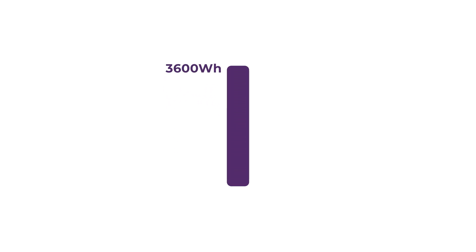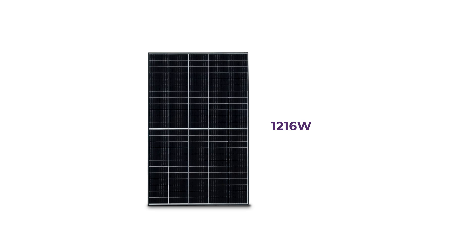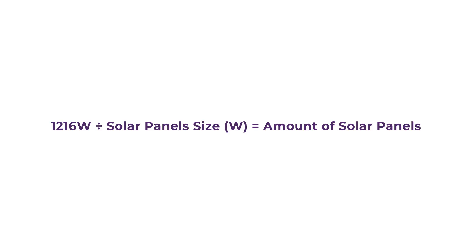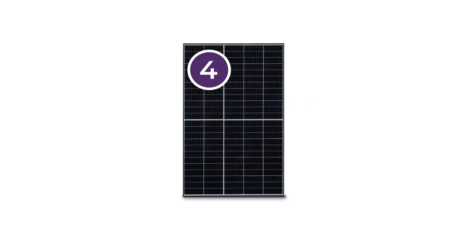For example, if you need to generate 3,600 watt hours a day to support your power use, you can then divide that by the peak sun hours. So 3,600 watt hours divided by 2.96 hours equals 1,216 watts. That means we need a solar panel array that is at least 1,216 watts. You then divide that by the size of your panels to know how many you need. Using 400 watt panels, the calculation is 1,216 divided by 400, which equals 3.04 — and because you can't have partial panels, we will need at least 4 solar panels.